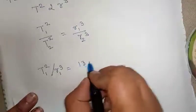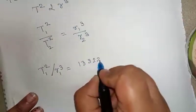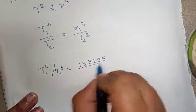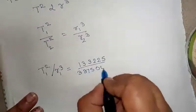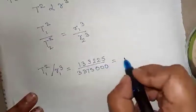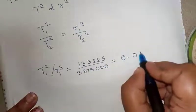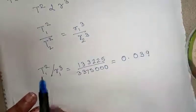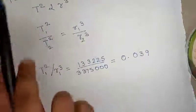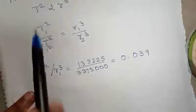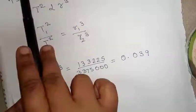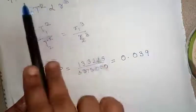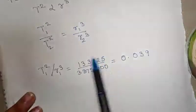...is equivalent to 133,225 upon 3,375,000, which is equivalent to 0.039. When we divide T₁² by r₁³, that is when we find the square of 365 and find the cube of 150, we get this value, and when we divide this we get 0.039. This is for Earth.